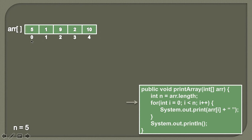Now, in order to print each and every element of an array, we need to iterate this array from the first index to the last index. As we know that the index of the array starts from zero, the value of i will be zero, because this is our starting point. We'll iterate in a for loop till i is less than n. So i will start from zero and it should go to four, meaning we want this loop to go from i=0 to i=4, so we have provided the condition that i should be less than n.